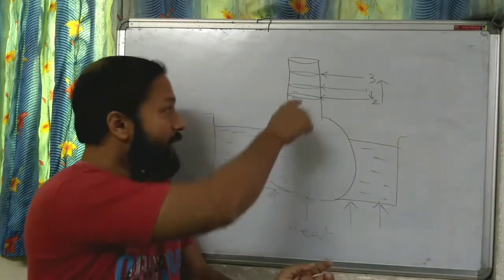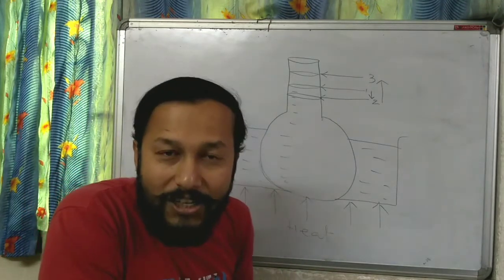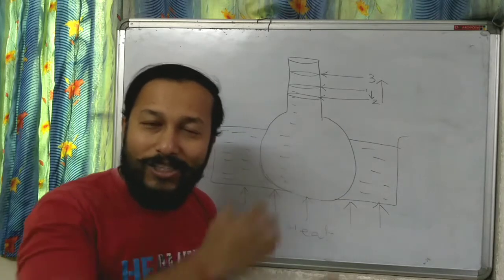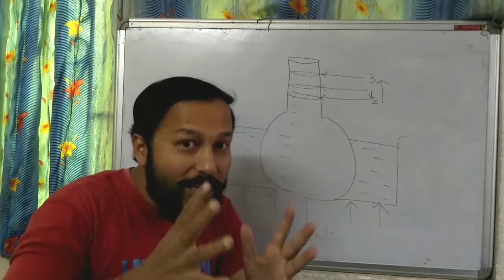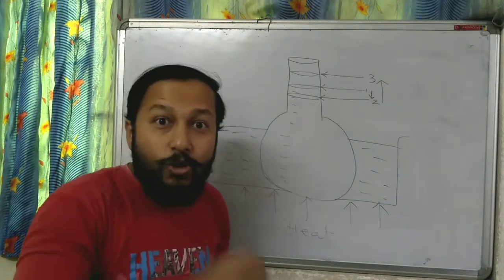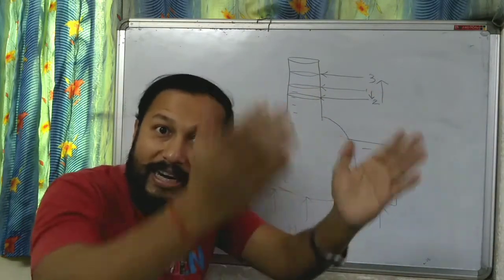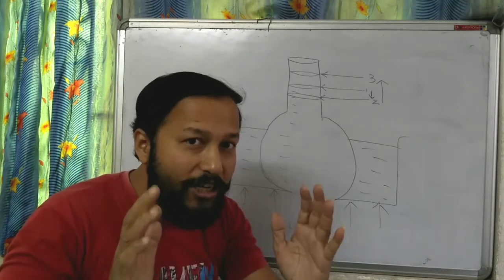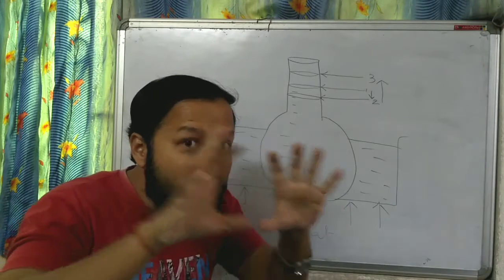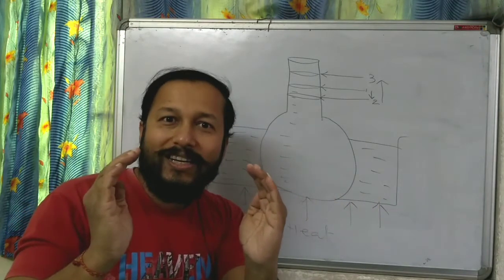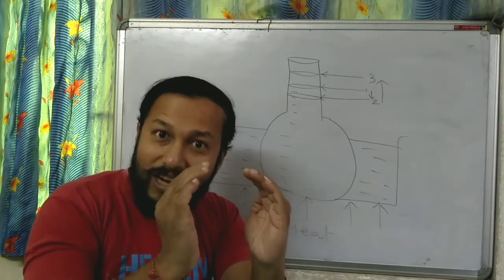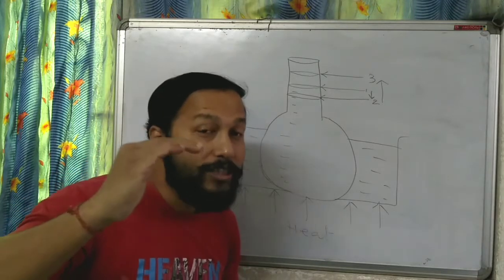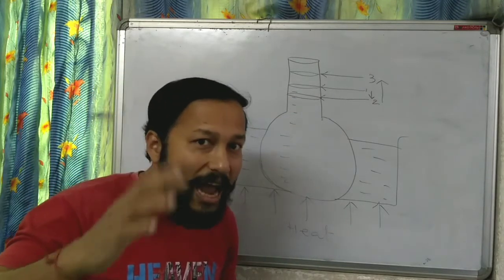Why is the liquid coming down first? Because along with the liquid, the flask is also getting heat. The flask is made up of glass, which is a solid, and that solid is also getting heated. You need a vessel to heat liquid, so the glass is also getting heat. Since the glass is taking heat, the volume of the glass also increases, and because of that the level of the liquid comes down first.